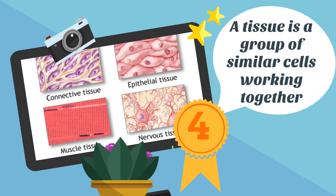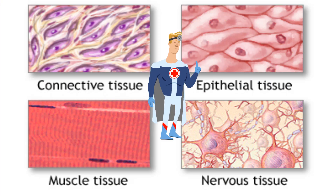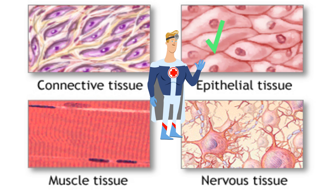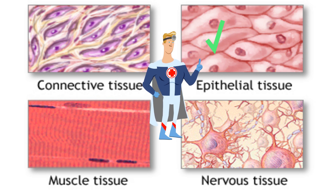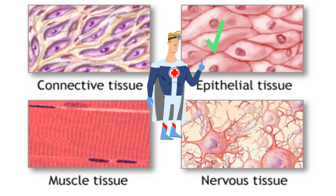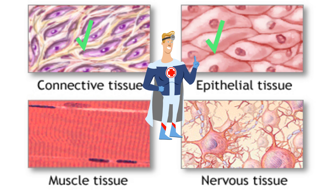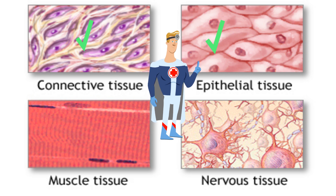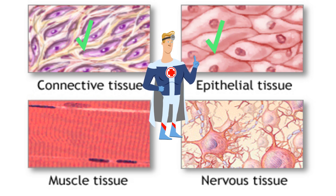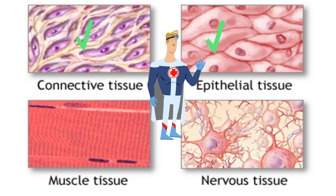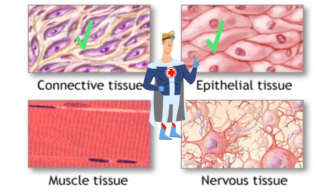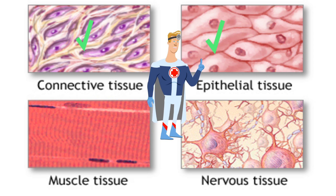There are four main types of tissues. Epithelial tissue covers the body surface and forms the lining for most internal cavities. Connective tissue is the most abundant tissue and is widely distributed throughout the human body. Examples include cartilage, bone, blood, and lymph.